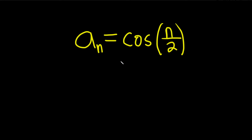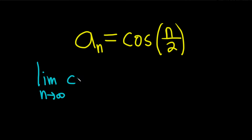We're given a sequence and asked to determine if it converges or diverges. Basically, we take the limit as n approaches infinity of the sequence — the cosine of n over 2. If we get a number as the answer, then we say it converges. If we don't get a number, then we say it diverges.